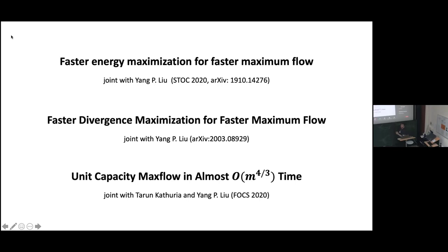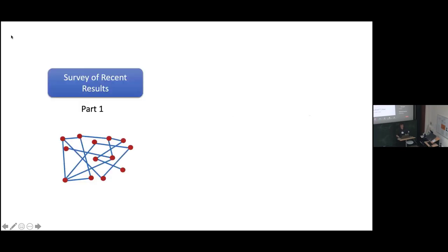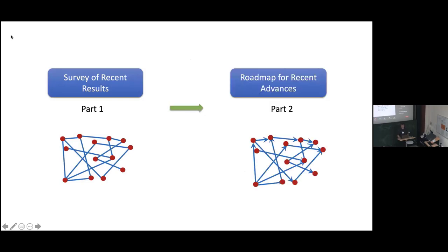This talk is primarily based on joint work with Yang, as well as more recent work also achieved simultaneously by Tarun Kathuria. This talk is going to have two parts. First, I'll give a brief survey of the recent results and what I'll be covering. Second, I'll give a roadmap for recent advances — specifically, quick survey of advances on the maximum flow problem on unit capacity graphs, and then a more technical roadmap for how to actually achieve them.